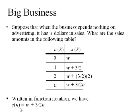In function notation, we might write S of N equals W plus 3 halves N. In this case, the slope, which is 3 halves, represents that change. It's that constant change in sales with respect to advertising, which in this case is 3 halves.